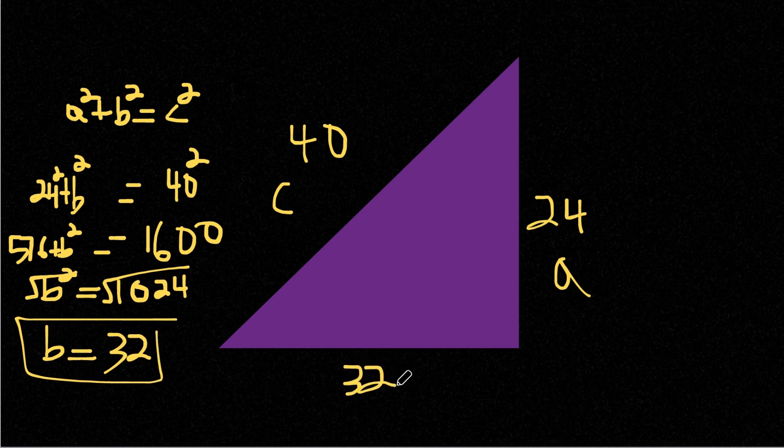So we're left with b equals the square root of 1,024, which is 32. So our missing side length b is 32. And that's how we find the missing side lengths of a right triangle using the Pythagorean theorem. Remember, this theorem only works for right triangles, triangles with a 90 degree angle. This theorem doesn't work for any other type of triangle.